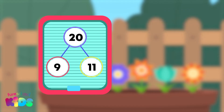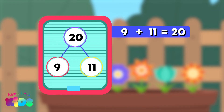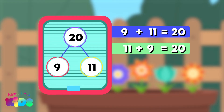What number bond to 20 is the butterfly showing us? 9 and 11. Well done. 20 equals 9 plus 11 and 11 plus 9.